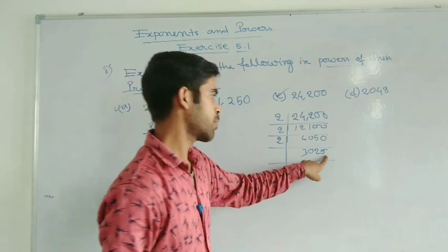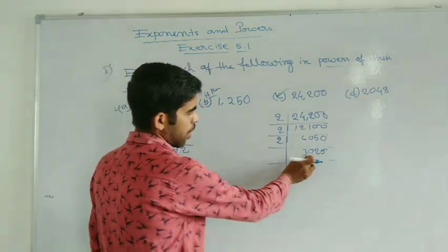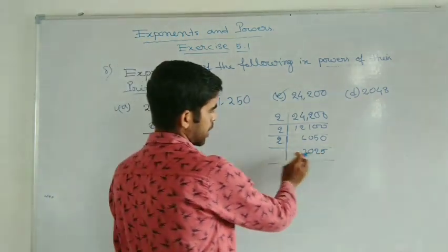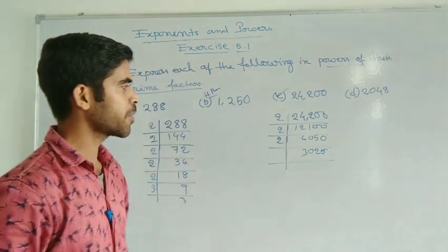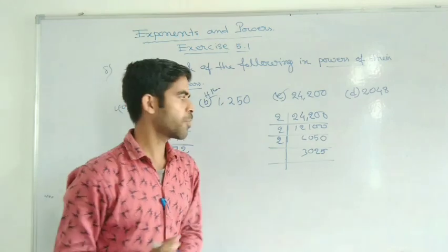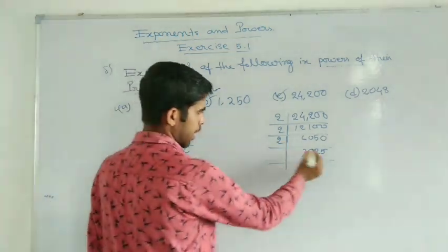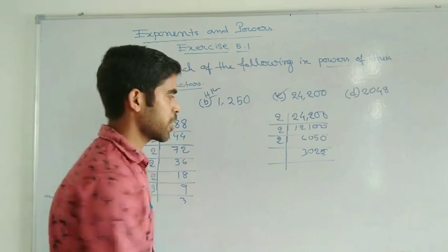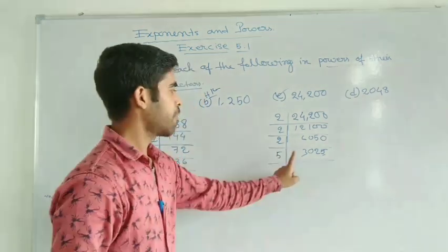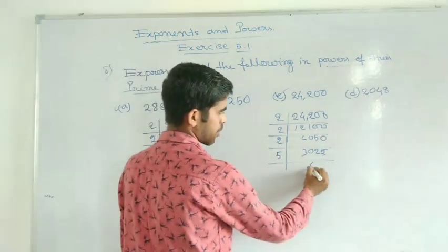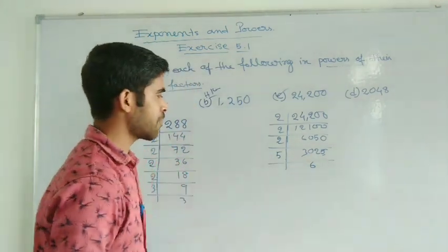Now this one is not divisible by 2 because the units digit is not an even number. We will check if it is divisible by 3. Add digits: 5 plus 2 is 7, plus 3 is 10. So 10 is not a multiple of 3, so it is not divisible by 3. Now the units digit is 5, so yes, you can divide this by 5.